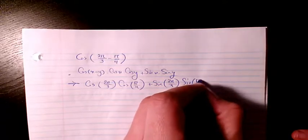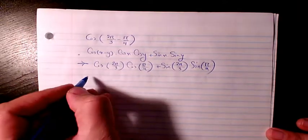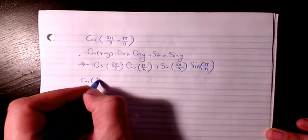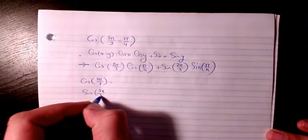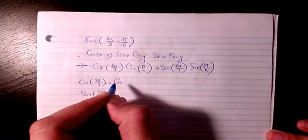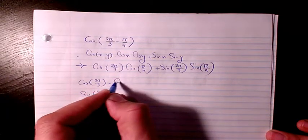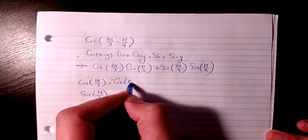sine 2π over 4. So let's find cosine 2π over 3 first and also sine 2π over 3. Cosine 2π over 3 is going to be equal to cosine negative cosine π minus π over 3.